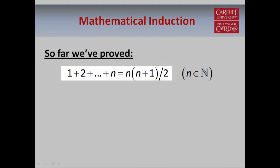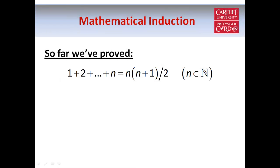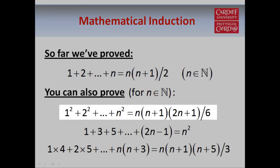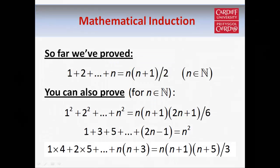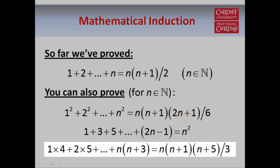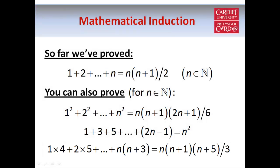So far we've proved this formula here, and there are many other properties of the natural numbers that you can try to prove if you want a bit more practice. For example, there's a well-known formula for the sum of the first n squared natural numbers. There's also an interesting result which says that if you add together the first n odd natural numbers the total is n squared, and that's another one you can prove by induction. And there are many other formulas involving summations, and the proofs of all of these results work in a very similar way to the one we've already seen.